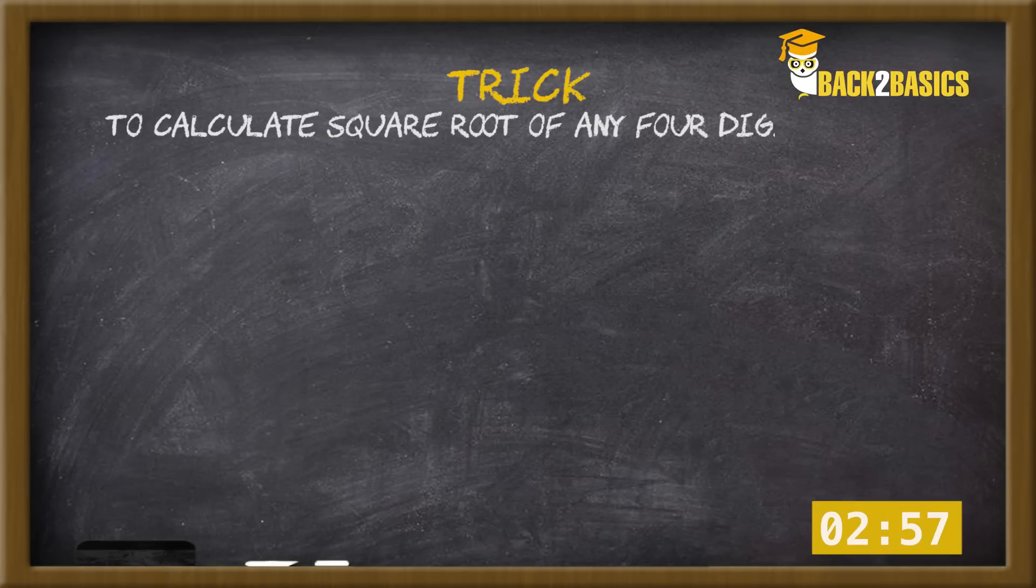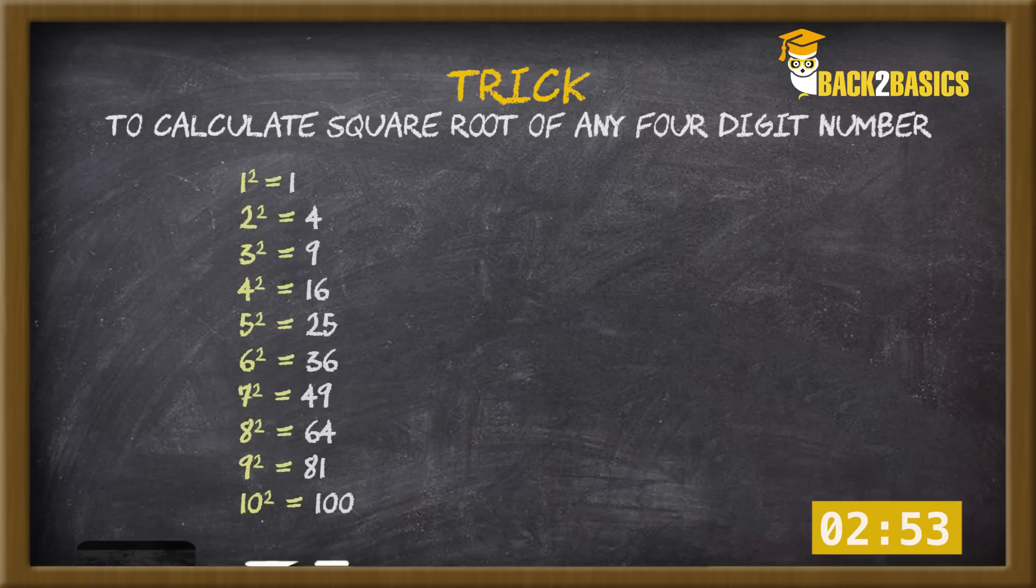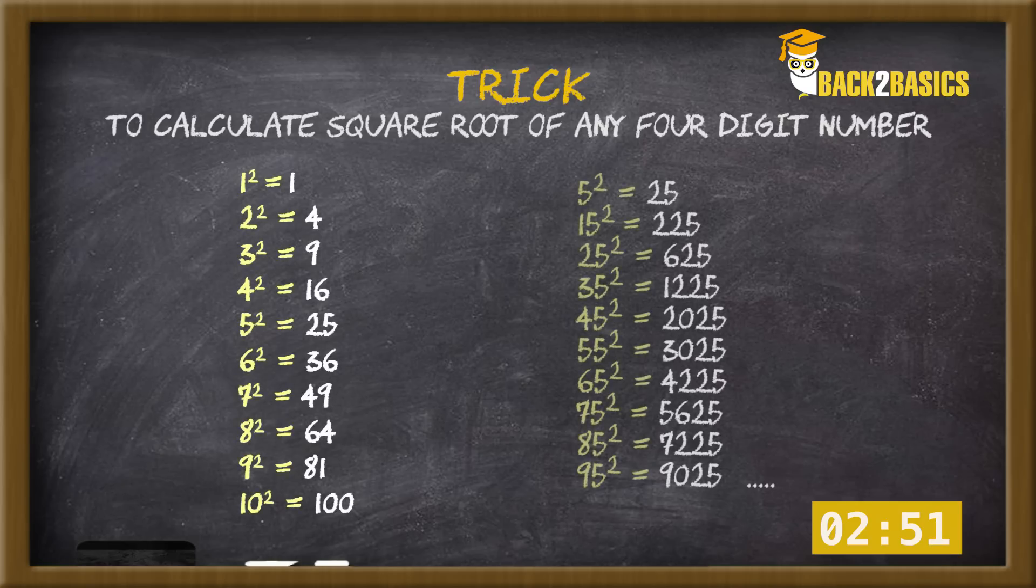To calculate square roots of any 4-digit number, we need to first know two things for sure: squares of 1 to 10, and squares of any number ending with the number 5.